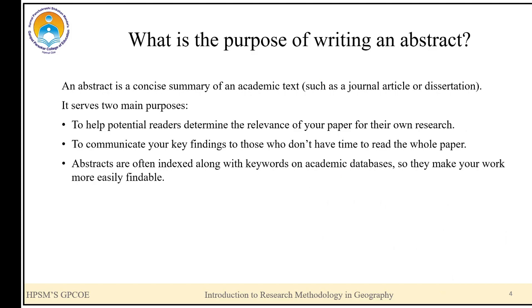What is the purpose of writing an abstract? An abstract is a concise summary of an academic text, such as a journal article or dissertation. It serves two main purposes: to help potential readers determine the relevance of your paper for their own research, and to communicate your key findings to those who don't have time to read the whole paper. Abstracts are often indexed along with keywords on academic databases, making your work more easily findable.